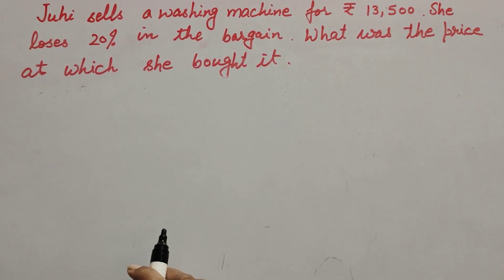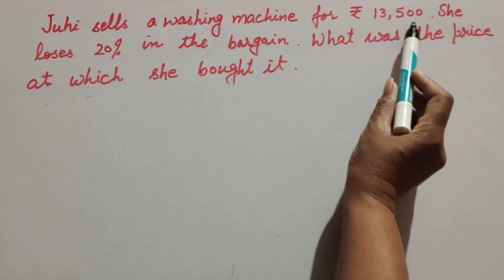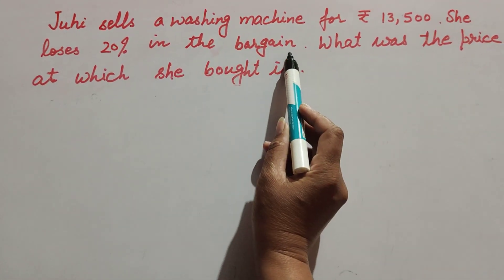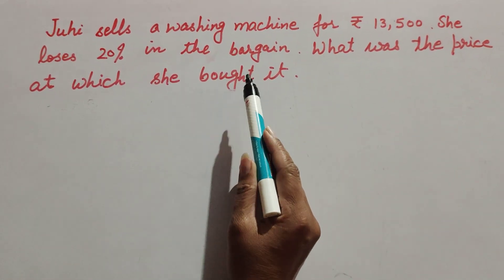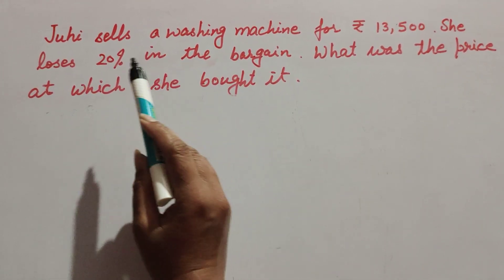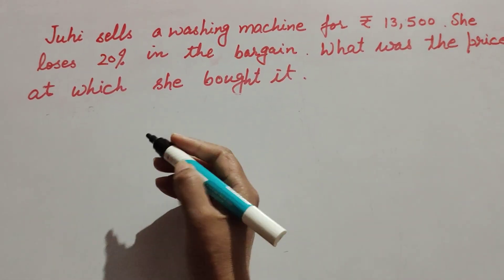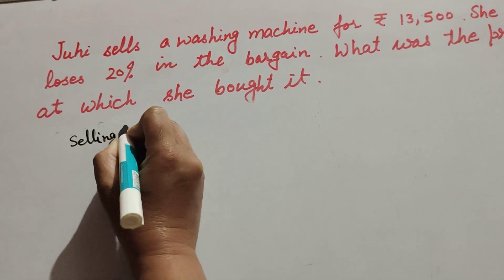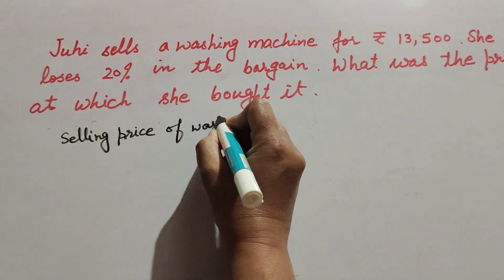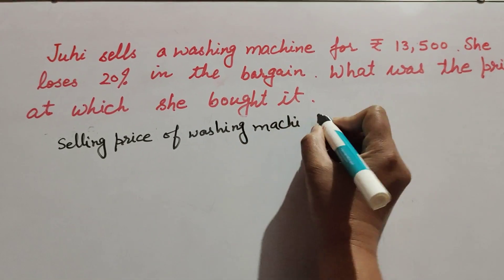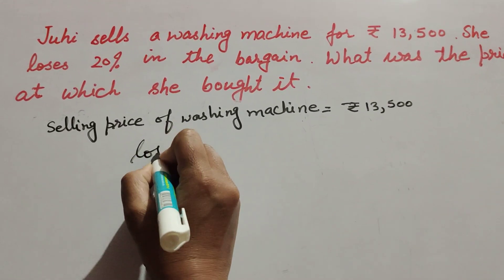Hello friends, welcome to my channel. In this video we discuss: Yuhi sells a washing machine for rupees 13,500 and losses 20% in the bargain. What was the price at which she bought it? So we find the cost price of the washing machine. Its loss percentage and selling price are given. The selling price of the washing machine is equal to rupees 13,500.